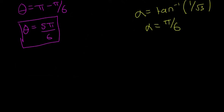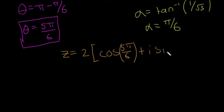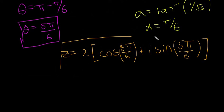So now we have our theta, our argument, and we have r, so we can write our polar form. I'm going to do this in orange. So we're going to have z is equal to 2(cos(5π/6) + i sin(5π/6)), and there is our answer. That's all there is to it.